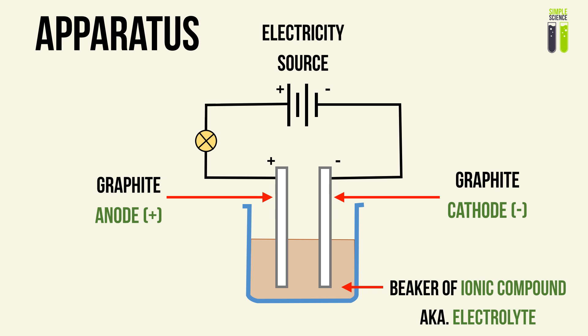In electrolysis, strictly, the electrode that is connected to the positive terminal is known as the anode, and the electrode that is connected to the negative terminal is known as the cathode. You attach these two electrodes to your circuit and dip them in a solution of your ionic compound, or in a molten ionic compound. The liquid or the solution is known as the electrolyte.